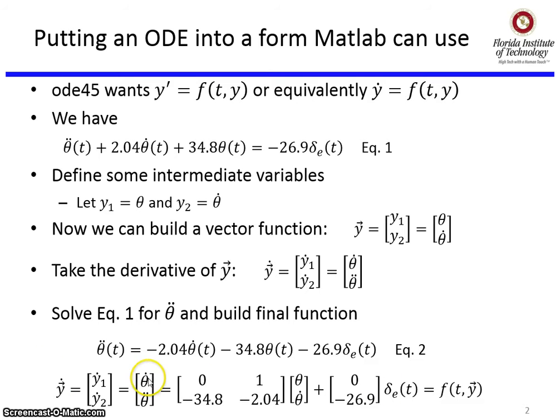The top row gives us θ̇ = θ̇. The bottom row uses equation 2: θ̈ = -34.8θ - 2.04θ̇ - 26.9δₑ. Let's check the math using matrix multiplication on the next slide.